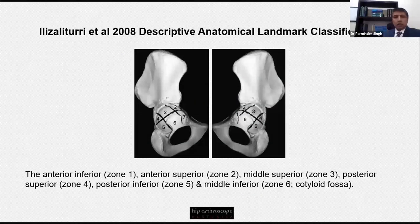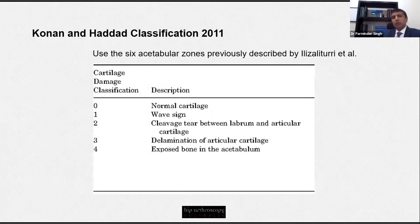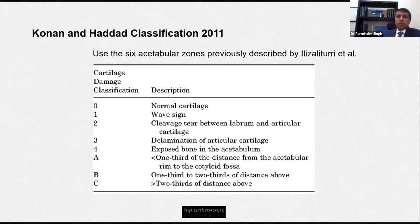Victor Elitsuri alongside Thomas Bird and Tom Sampson described the anatomical zones, providing a descriptive location of the cartilage lesion but not quantifying it. More recently, Conan and Haddad were able to not only describe the articular wave sign lesion as grade one, but also describe the size of the defect, dividing the acetabulum into thirds. This was the first classification to describe the actual wave sign and its size, though it didn't really help with management of the condition.